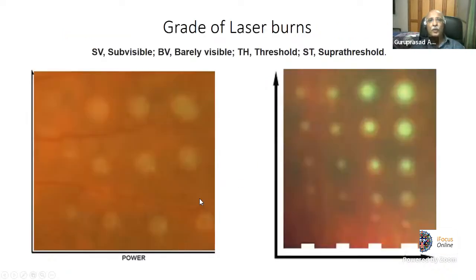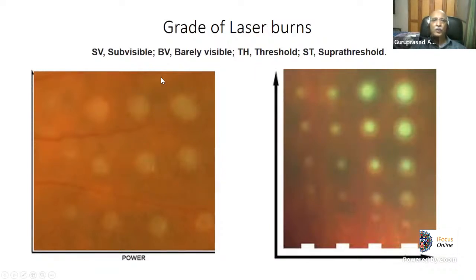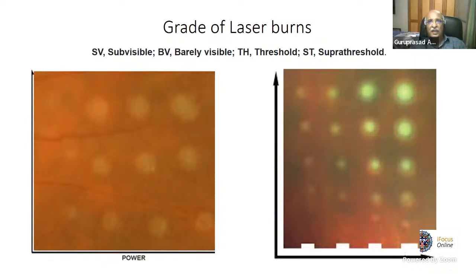We need to know about the grades of laser burns — from sub-visible, barely visible, threshold, and supra-threshold, also called grade 1, 2, 3, and 4. These grades depend not on the spot size but on the duration of the laser and the power employed.